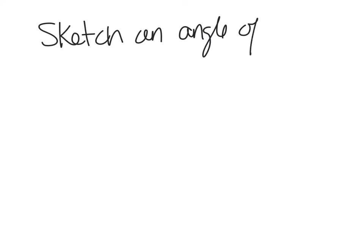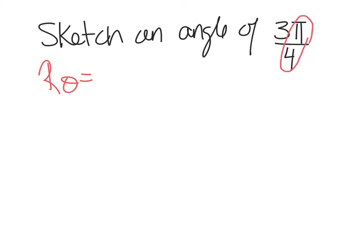We've seen enough questions now that say something like: sketch an angle of 3π/4. What's going through your head? The reference angle is blank. As long as this fraction is reduced, I should be able to see a pi over 4, so my reference angle is 45 degrees. I see a 3 in front, so I multiply 3 by 45 - quick mental math gives me 135. So they're really saying sketch an angle of 135 degrees.